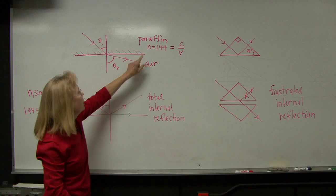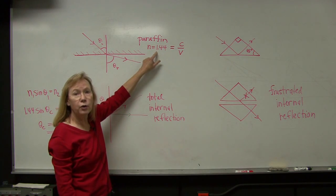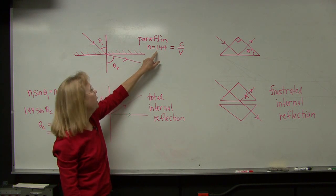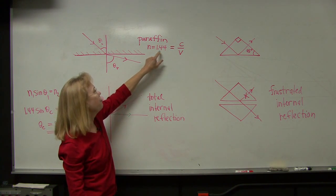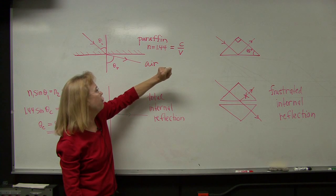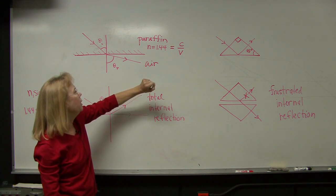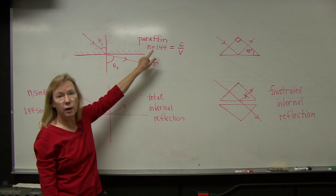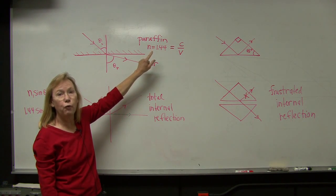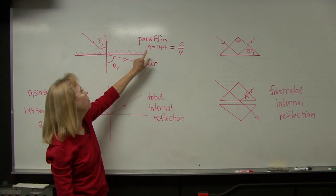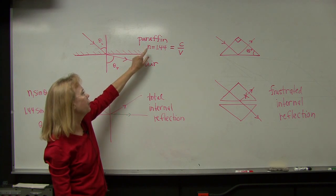Paraffin has an index of refraction equal to 1.44. And the index of refraction is defined as the speed of the wave in a vacuum over the speed of the wave in the medium.